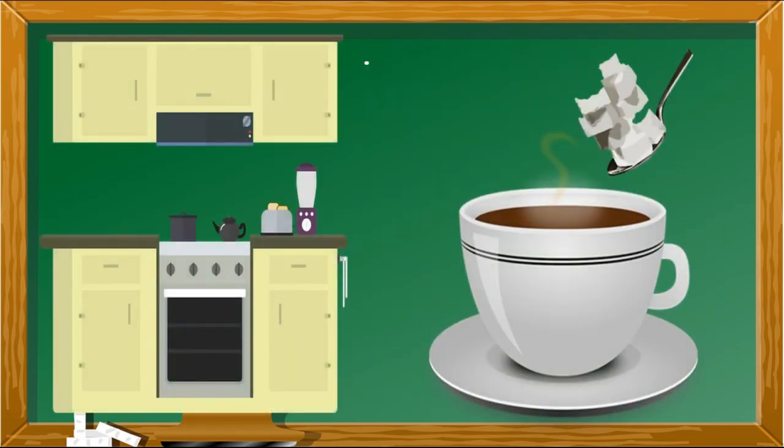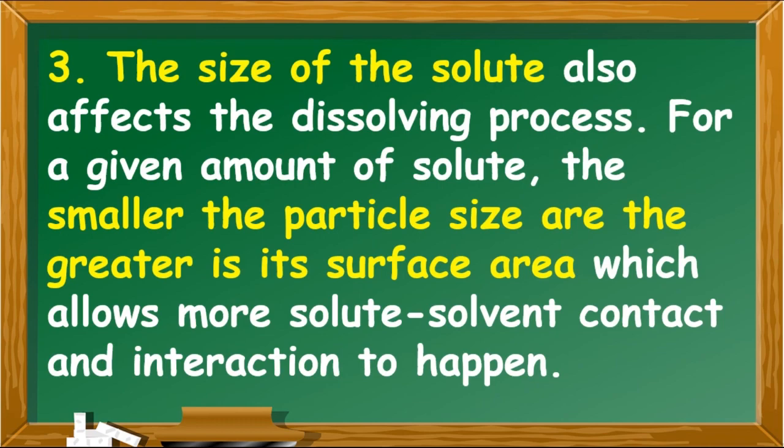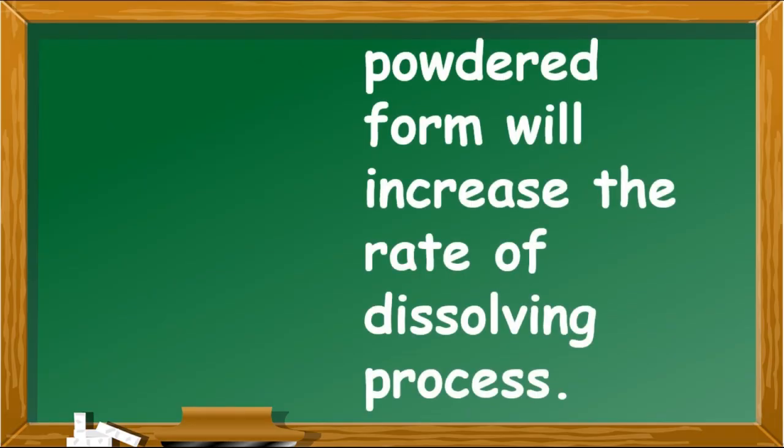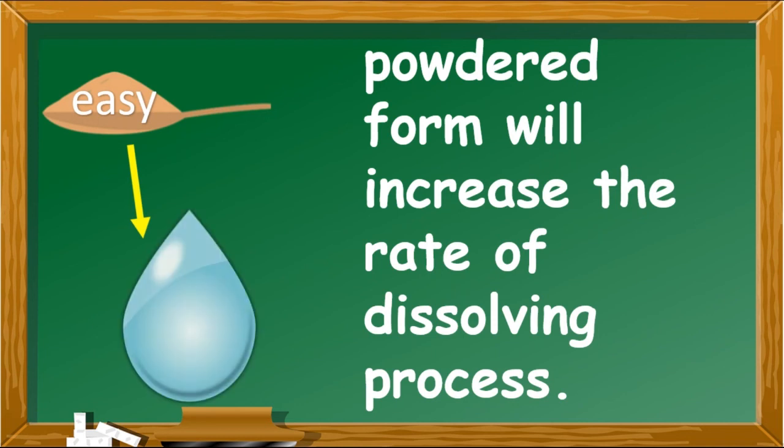The size of the solute also affects the dissolving process. For a given amount of solute, the smaller the particle size, the greater is its surface area, which allows more solute-solvent contact and interaction to happen. Pounding a solid solute into powder form will increase the rate of dissolving process. For example, sinigang mix powder dissolves more easily than sinigang mix cubes when mixed with water.